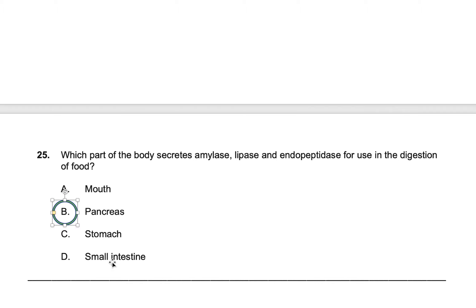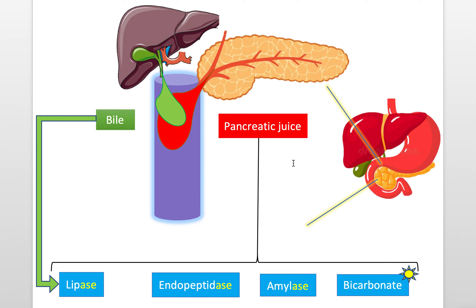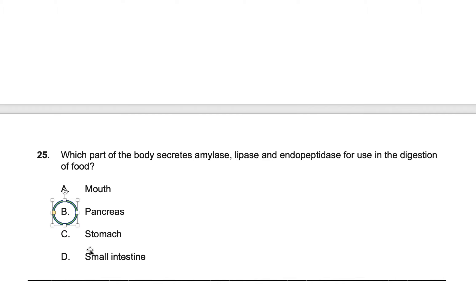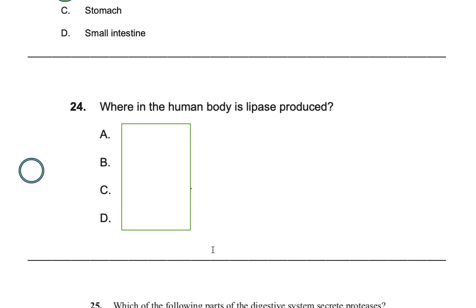The small intestine doesn't release any of these enzymes either — and this is a tricky point. The small intestine is the blue pipe where everything is mixed and where the action happens, but the small intestine itself doesn't make anything. The pancreas makes things and the liver makes things that are released into the small intestine. When food arrives, the reaction and breakdown happens there, but the small intestine itself does not release any digestive enzymes. So the answer is B, the pancreas.